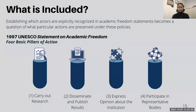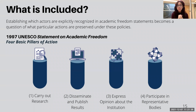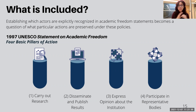Establishing which actors are explicitly recognized in academic freedom policies becomes a question of what particular actions are preserved under said policies. According to the 1997 UNESCO statement on academic freedom, the scope of acknowledged and protected action can be broken down into four basic pillars: carrying out research, disseminating and publishing results, expressing opinion about the institution, and participating in representative bodies.